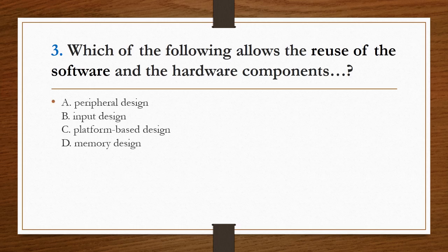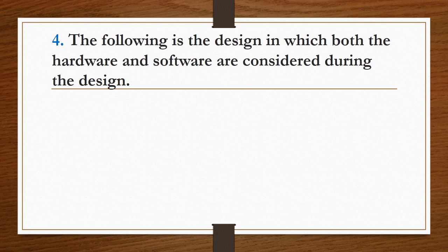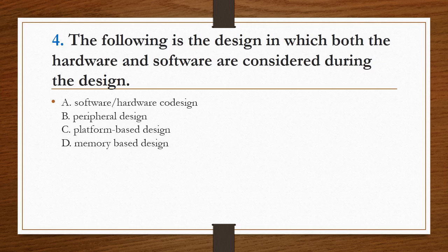Next question: which of the following allows the reuse of software and hardware components? Options are peripheral design, input design, platform-based design, and memory design. Answer is option C, platform-based design. Next question: which design considers both hardware and software during design? Options include software-hardware co-design, peripheral design, platform-based design, and memory-based design. Answer is option A, software-hardware co-design.